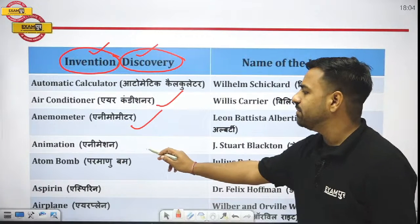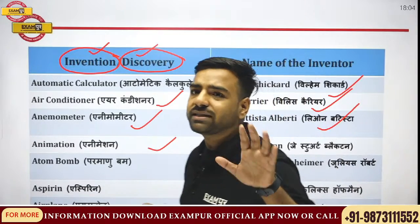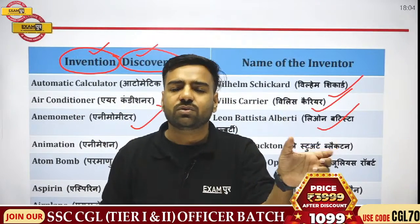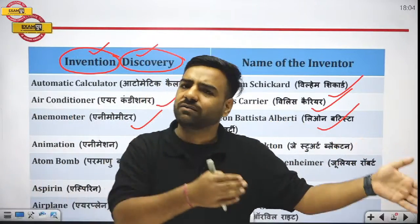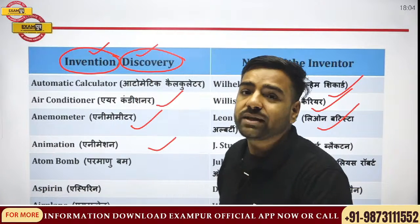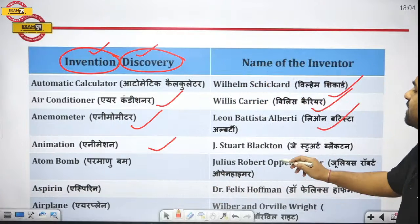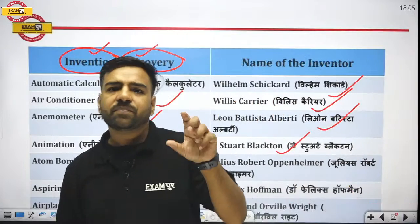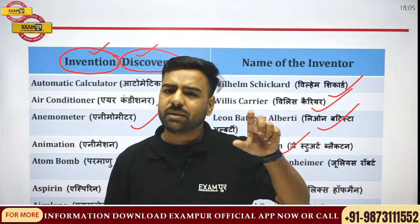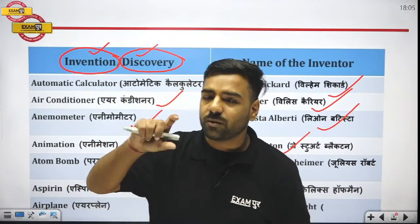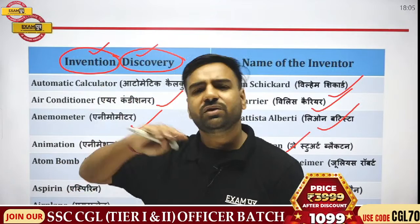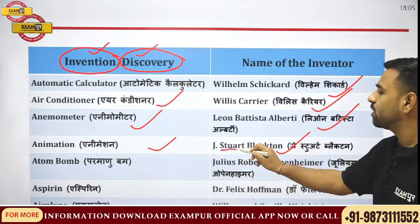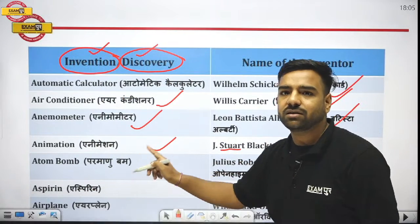Next comes animation. We have seen animations on TV — cartoons like Mickey Mouse and Donald Duck. Who actually discovered animation? It was J. Stuart Blackton. The trick to remember this: there was a movie called Stuart Little — that small mouse. So from Stuart Little we can remember Stuart Blackton, who created animation.